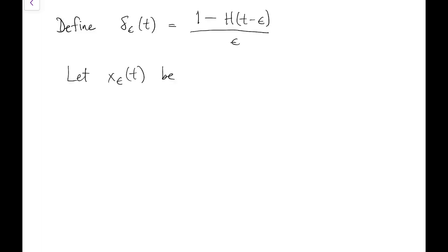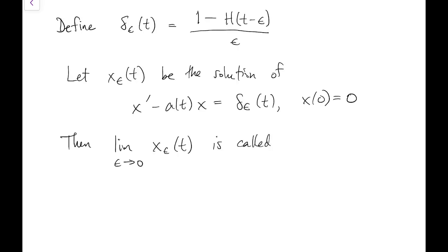Let x sub epsilon be the solution of our linear ODE with delta sub epsilon as the forcing function. If we take the limit of this solution as epsilon goes to 0, we call the result the impulse response to the ODE.